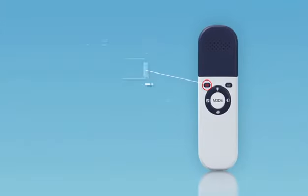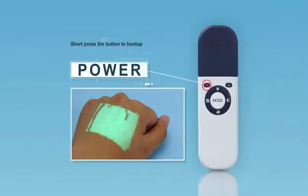To power on VeinFinder, short press the power button. Short press this button again to turn the device off.